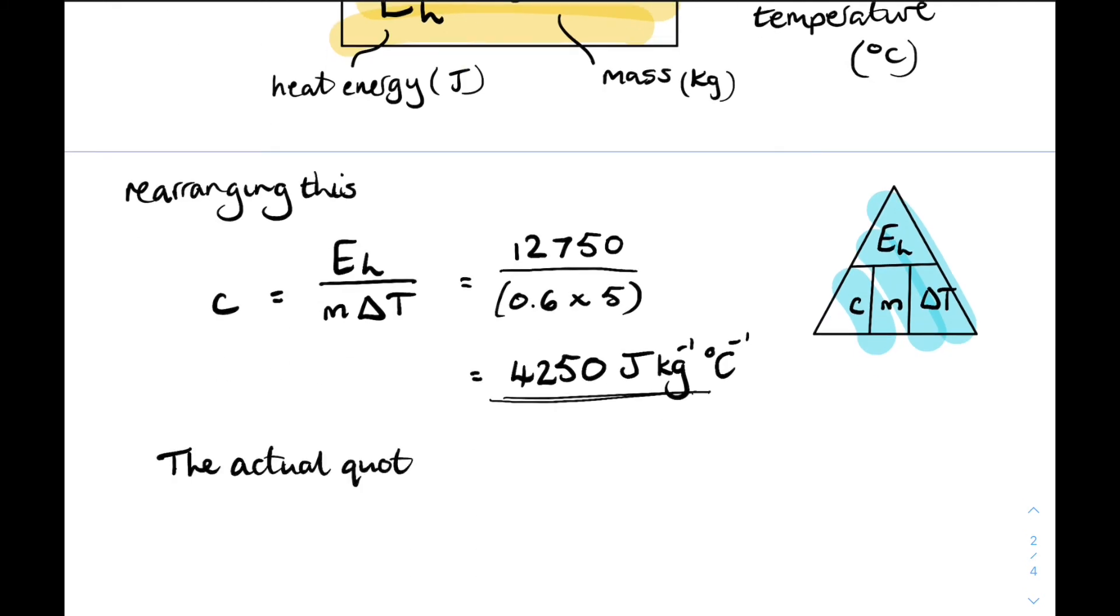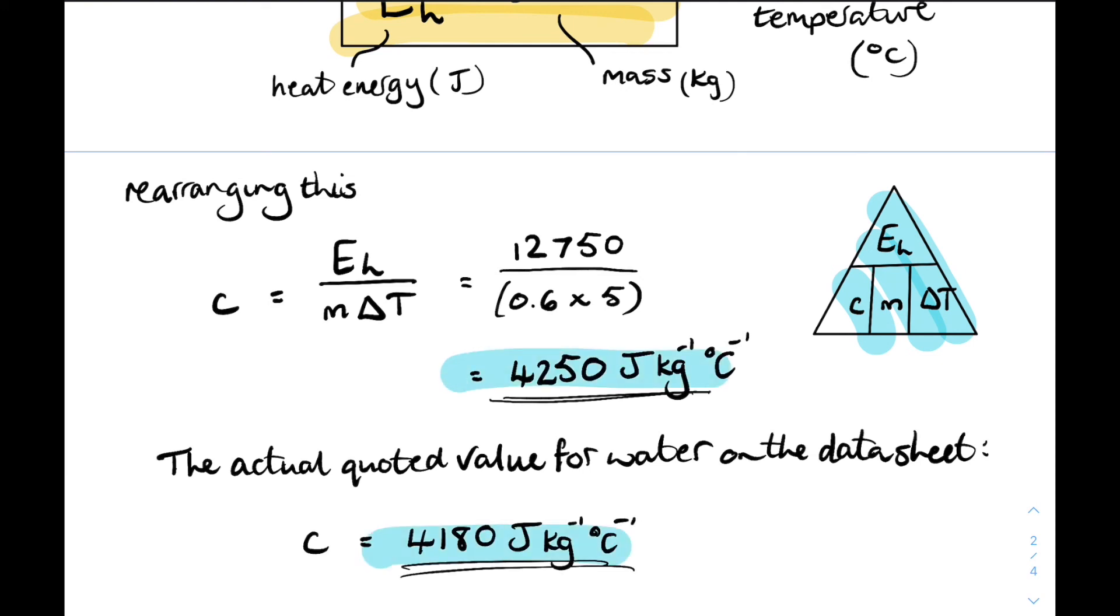And the actual quoted value for water on your datasheet is 4180 joules per kilogram per degree C. So we're not bad. Bingo.